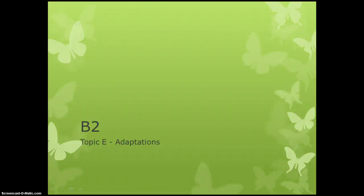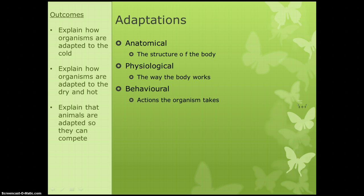Next up is the topic of adaptations. Adaptations means how animals or plants are specially suited to live in the environment that they do. There are different types of adaptations: anatomical, which is to do with the structure of the body; physiological, which is to do with the way that the body works; and behavioural, which is to do with the behaviour or actions that the organism takes. We need to look at cold, hot, and competition.